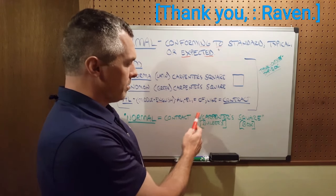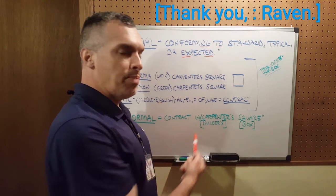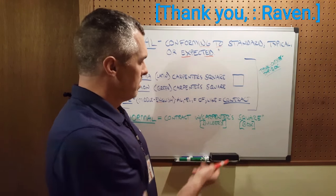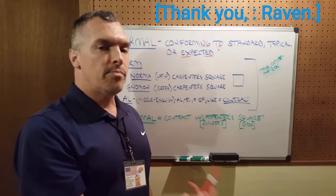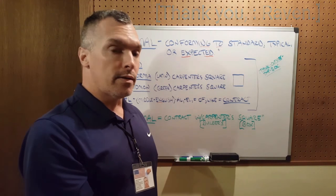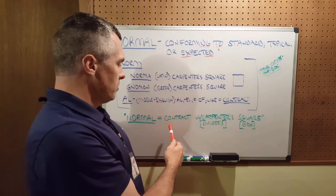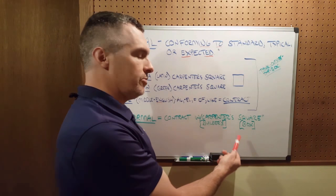So a carpenter is a builder. A square can be a box, a box is square. So normal would be a contract with the builder's box.